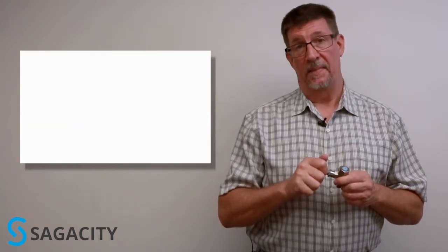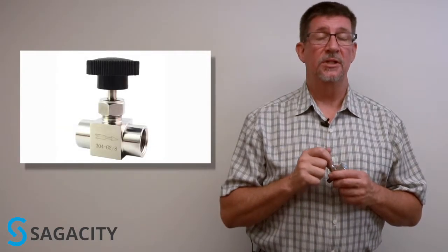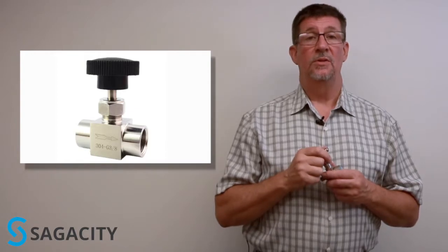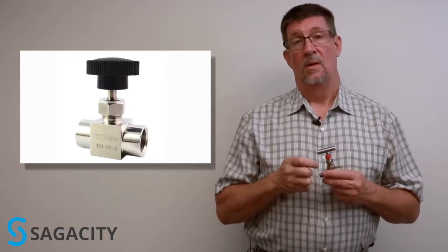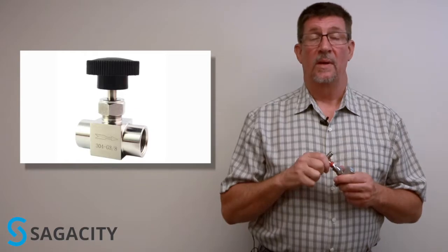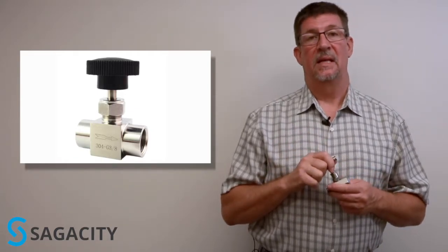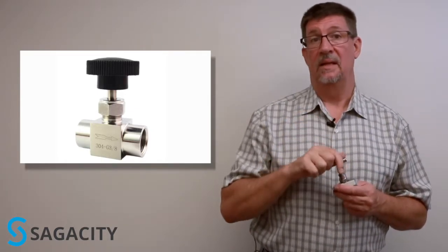However, if you see a knob type handle, that usually indicates a precision type needle valve that is being used to control flow, say, into a rotometer or other analyzer, or any type of device that needs to have flow controlled precisely in that application.